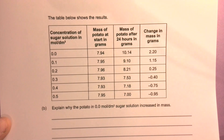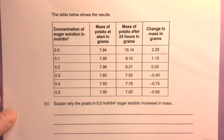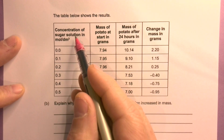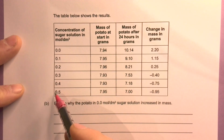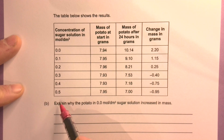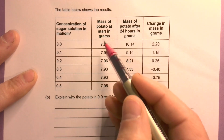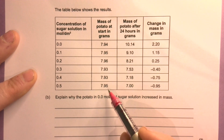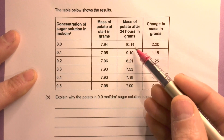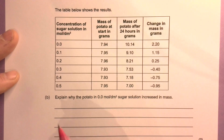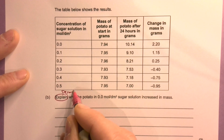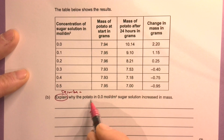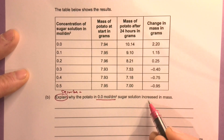The table below shows the results. Here's the concentration — they tested one, two, three, four, five, six in total. There's the mass that starts, so they're all around the same mass. Mass after 24 hours. We need to explain — describe what happens and say why the potato in that one increased in mass.